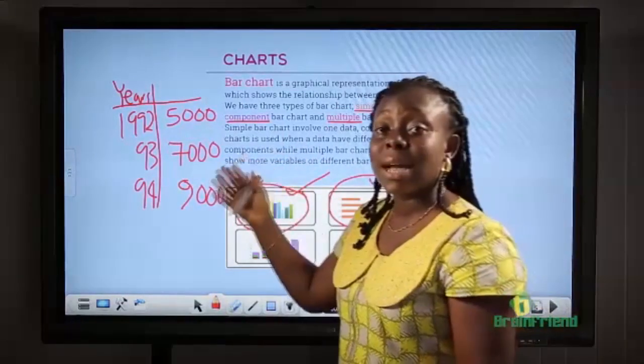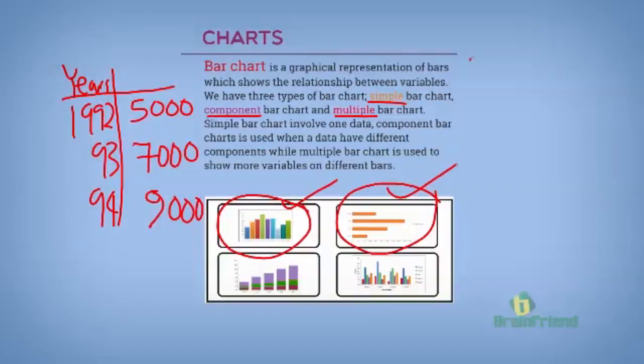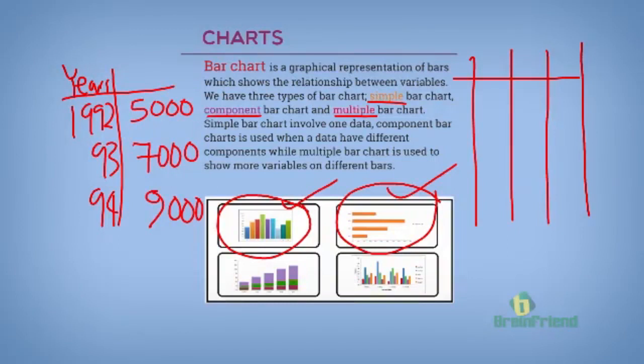But in a case where you have more than one variable, assuming we have three variables, apple, oranges, and mango for three different years. So, this is 1992, 93, and 94. And for apples, for mango, and for oranges.